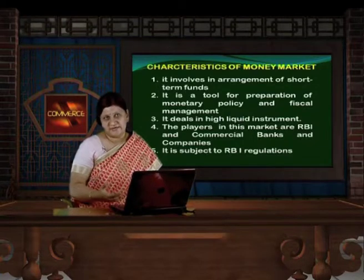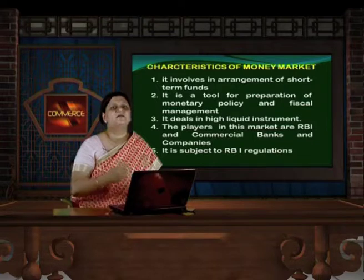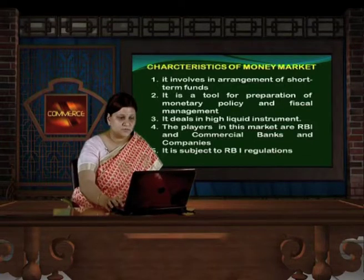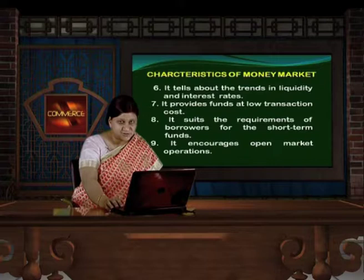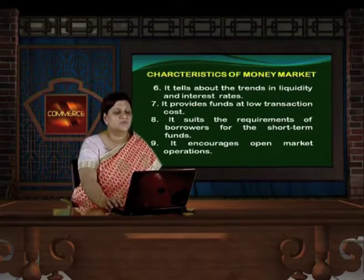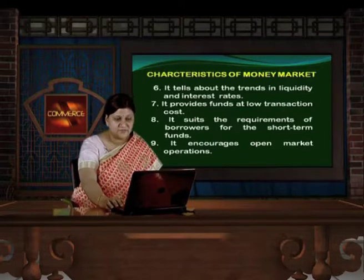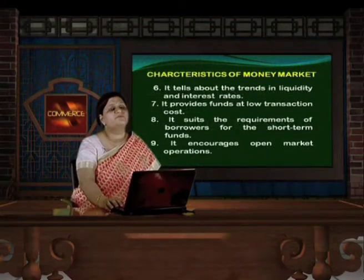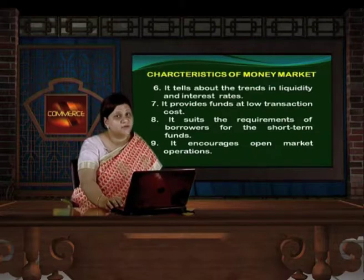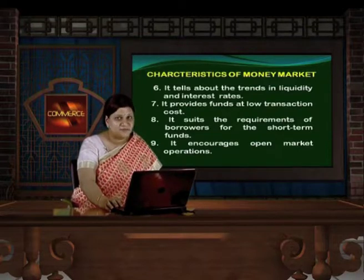The money market is regulated by RBI, the Reserve Bank of India, the apex body. It tells about trends in liquidity and interest rates, provides funds at low transaction cost as the gestation period is as low as 3 to 6 months, suits the requirement of borrowers for short-term funds, and encourages open market operations. Overall, money market is a place where financial institutions deal with financial assets to meet short-term requirements — the borrower takes money for a short-term period.